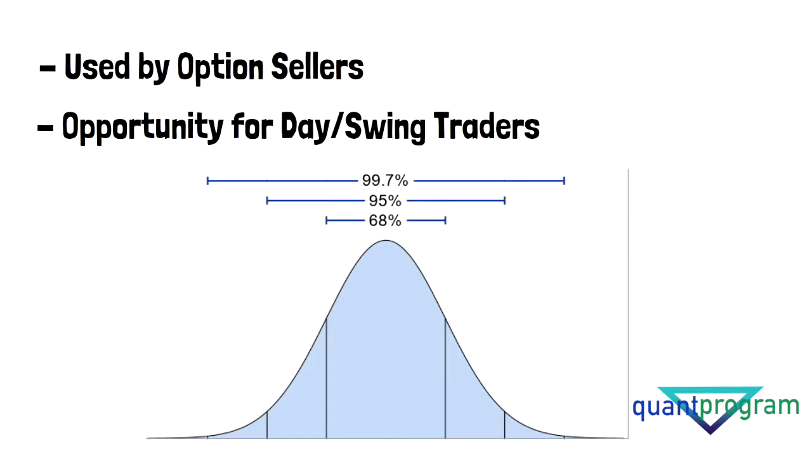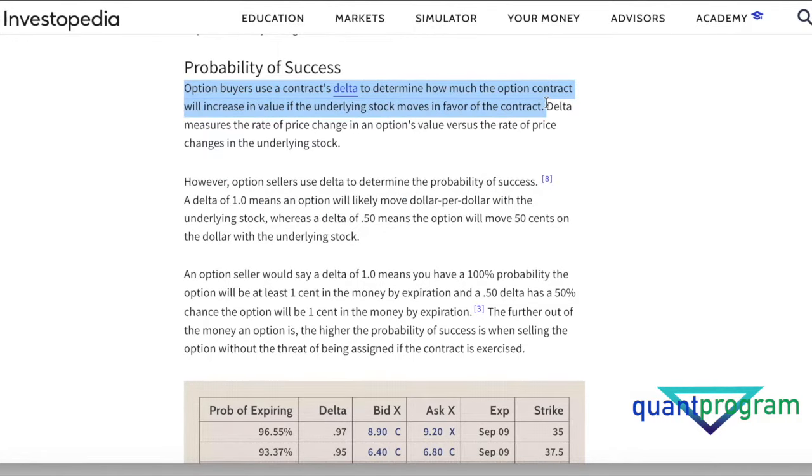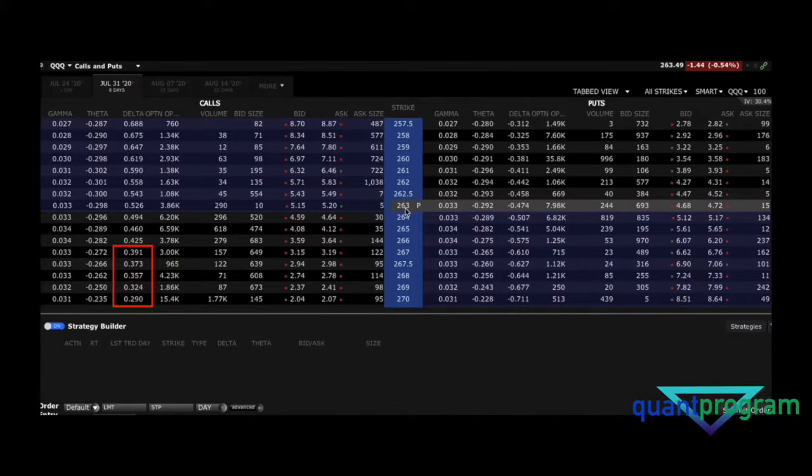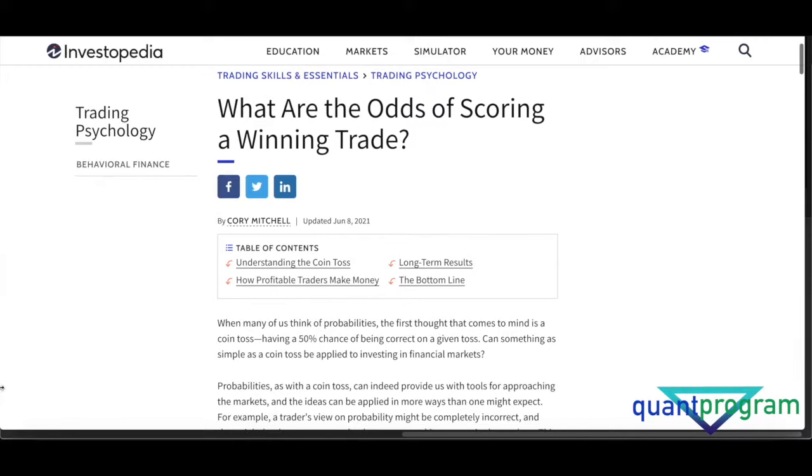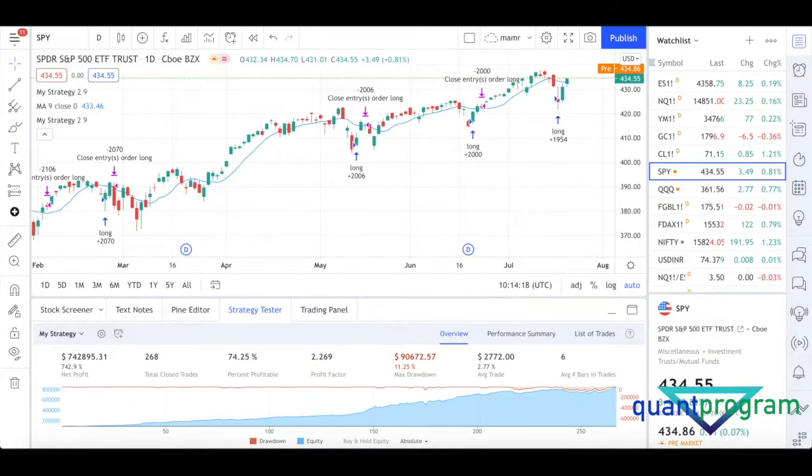Probability distribution curves are used heavily by option traders to calculate their deltas and how far out of the money to sell or buy options. But it's not used by swing traders and day traders, and I think they're missing out on great opportunities. The advantage is you get the odds in your favor, the statistics in your favor, and you find trading opportunities with more statistical edge.